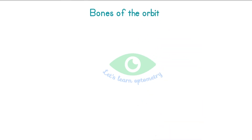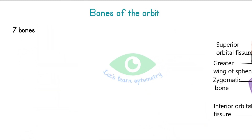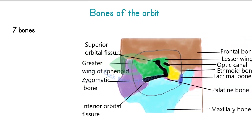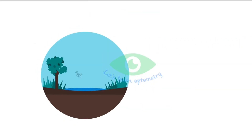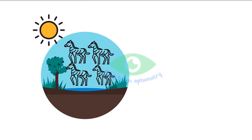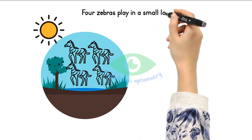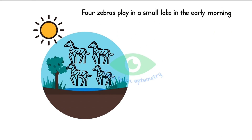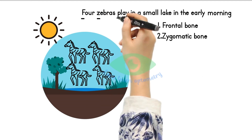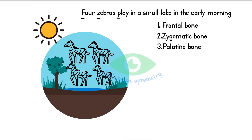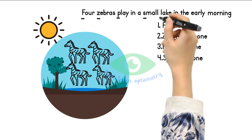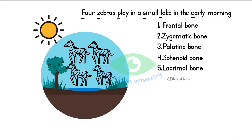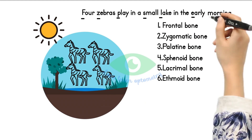Bones of the orbit. Each orbit is composed of seven bones. Let's remember the bones easily with the help of a mnemonic. The mnemonic is: Four Zebras Placed in a Small Lake in the Early Morning. F stands for the frontal bone, Z for zygomatic bone, P for palatine bone, S for the sphenoid bone, L for the lacrimal bone, E for ethmoid bone, and M for the maxillary bone.